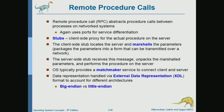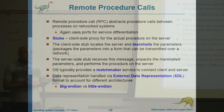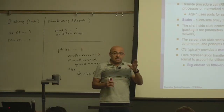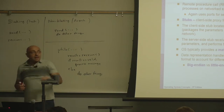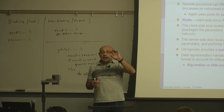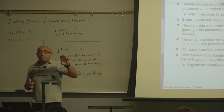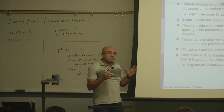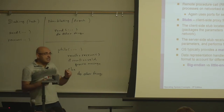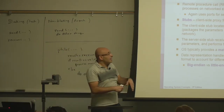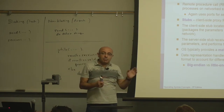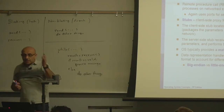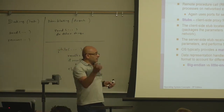Remote procedure calls are an interesting concept — a procedure call implemented as a message across the network. A process makes a function call that is implemented on a server machine. The system takes the function parameters, marshals them — packaging them in a format that can be transmitted over the network — sends the message, and the server unpacks them. On the client side we do the marshalling; on the server side we do the unpacking, execution, and returning of results.